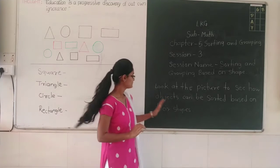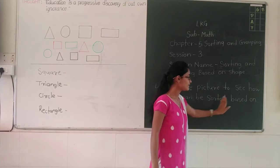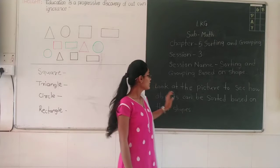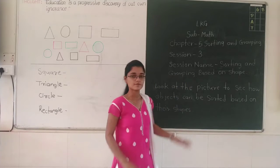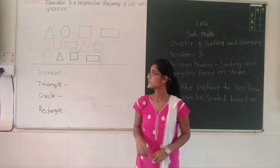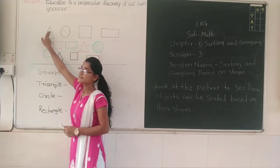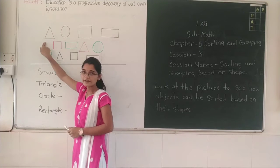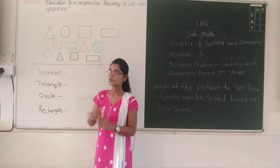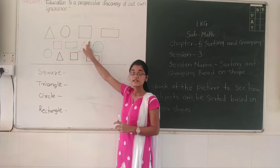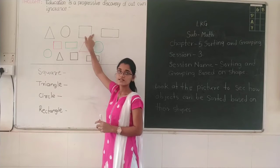Now look at the picture to see how objects can be sorted based on their shapes. As you can see, I have drawn some shapes. First is triangle — three corners, three sides, so this is triangle. This is circle — this shape doesn't have any corner or any side, so this is circle. Third one is square — four corners and four equal sides, so this is square.